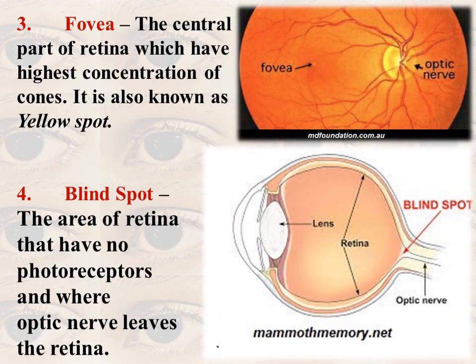Fovea is the central part of the retina that has the highest concentration of cones. There are sixty lakh cones in each eye, and the highest concentration is found in one location — the fovea. Due to that concentration, its color appears light yellow, which is why it is also known as the yellow spot.